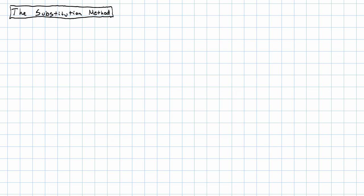In the last video, we saw this system of equations, and we found eventually that the solution to the system was x equals three-sevenths, y equals eleven-sevenths. How could we have done that without any guesswork?